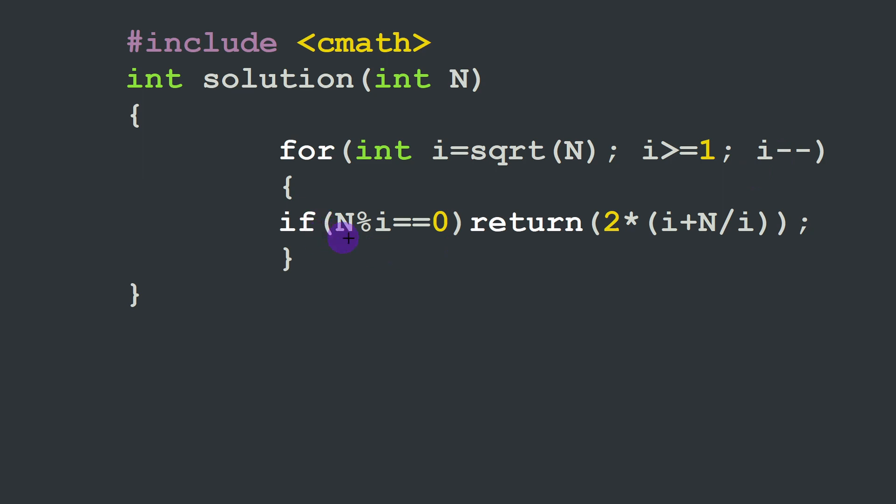If N the area modulus one of the sides of the rectangle is equal to zero, meaning we can divide these integers and not have some remains, we are going to return the perimeter in this case.